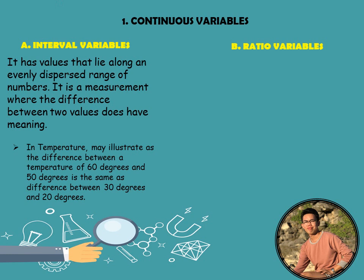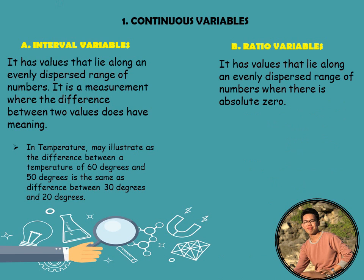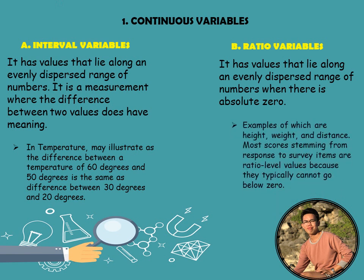Even if the numbers differ, the differences are equal — the range is the same. In interval variables, there is no absence of zero, because zero is given meaning here. Now for ratio variables: it also has values along an evenly dispersed range of numbers, but ratio variables have an absolute zero. Interval variables do not. Examples of ratio variables are height, weight, and distance. Most scores from survey items are ratio level because they typically cannot go below zero. In ratio variables, 10 pounds is double 5 pounds. But in interval variables, 80 degrees cannot be said to be double 40 degrees, because they represent different levels of heat and cold.